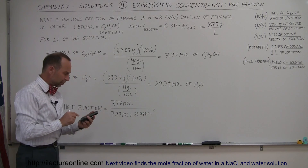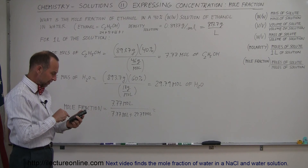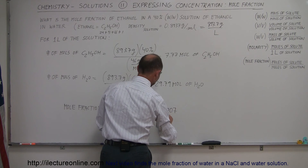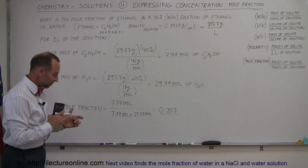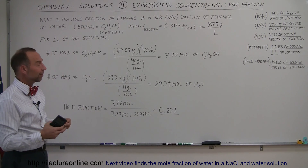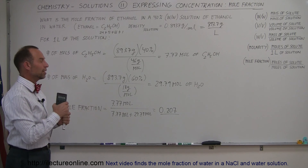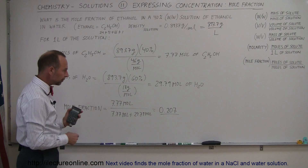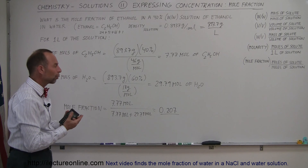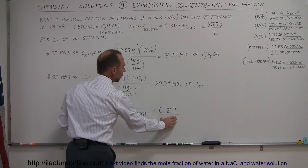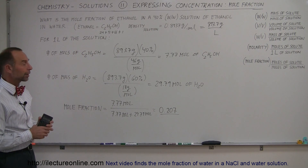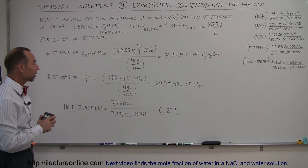And what is that equal to? The fraction is 0.207. That means 20.7% of the moles of the total solution are ethanol, and the other 79.3% of the moles would be water. This is really telling us, of all the moles of that solution, what fraction of those are ethanol — about one-fifth of the moles are ethanol and about four-fifths is water. That's what we mean by mole fraction.